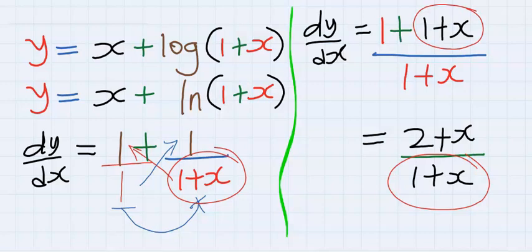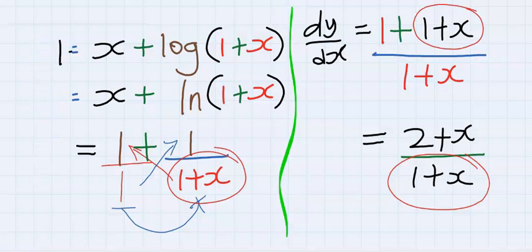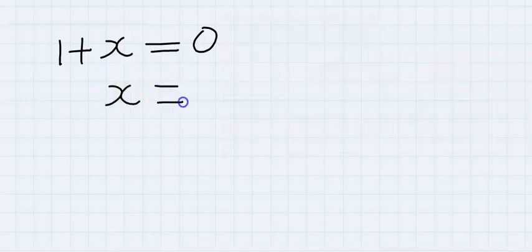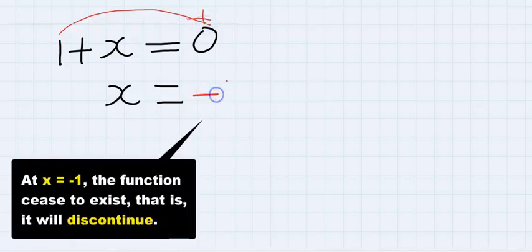Hence for this equation to discontinue, 1 plus x will be equal to 0. Hence x will be here, and on the other side 1 will move and 1 will become minus 1. And this becomes our answer.